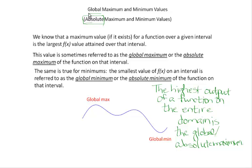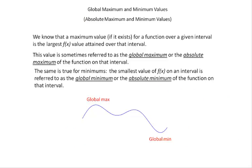One little nuance of vocabulary: sometimes they just say find the minimum or the maximum. That is an implied absolute or global — 'the' means there's only one. It's the minimum over the interval they've given us or over the entire domain of the function. A maximum value, if it exists for a function over a given interval — or if no interval is given, over the entire domain — is the largest output value, the f(x) output value attained over the interval. This value is referred to as global, absolute, or 'the' maximum.